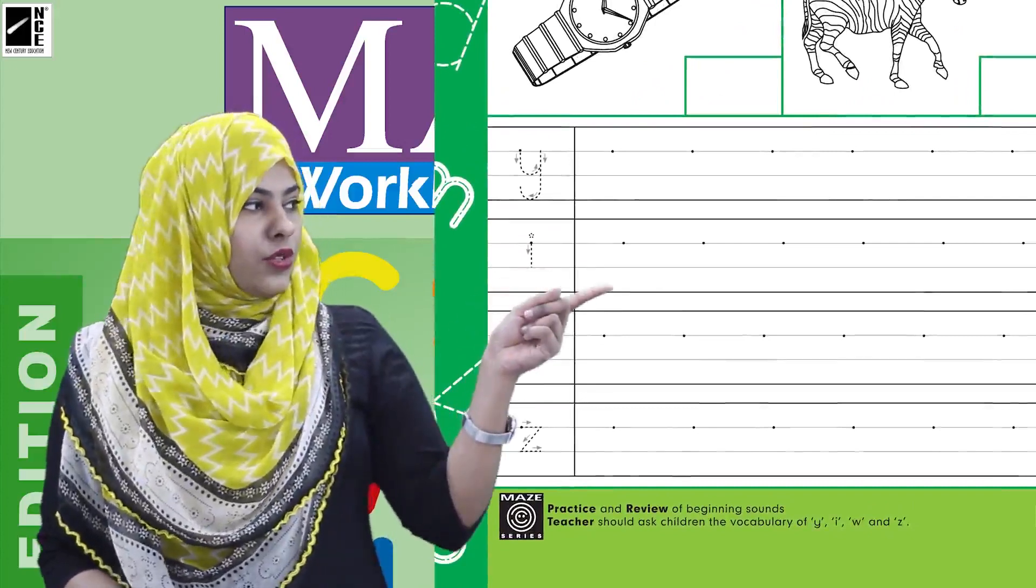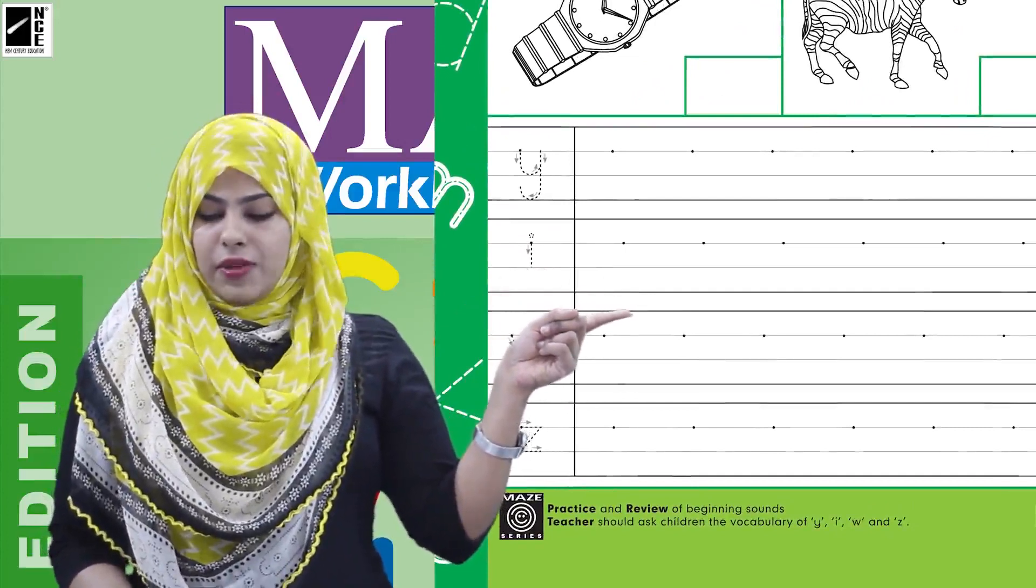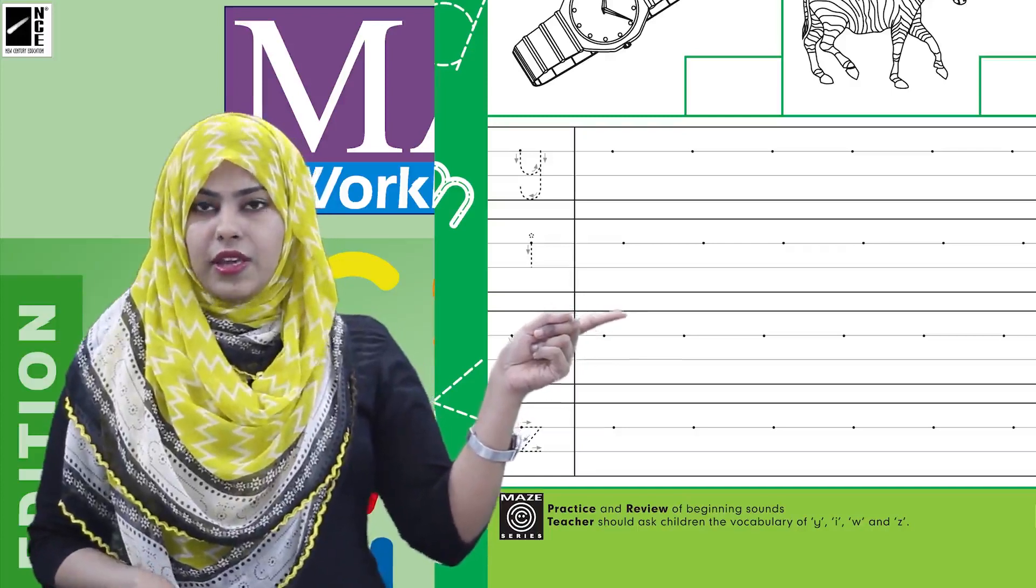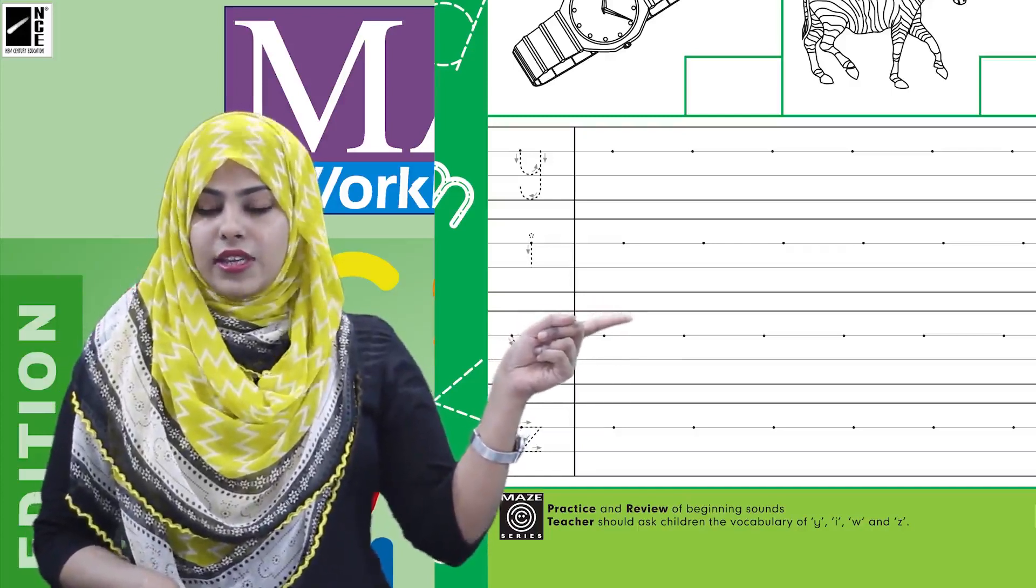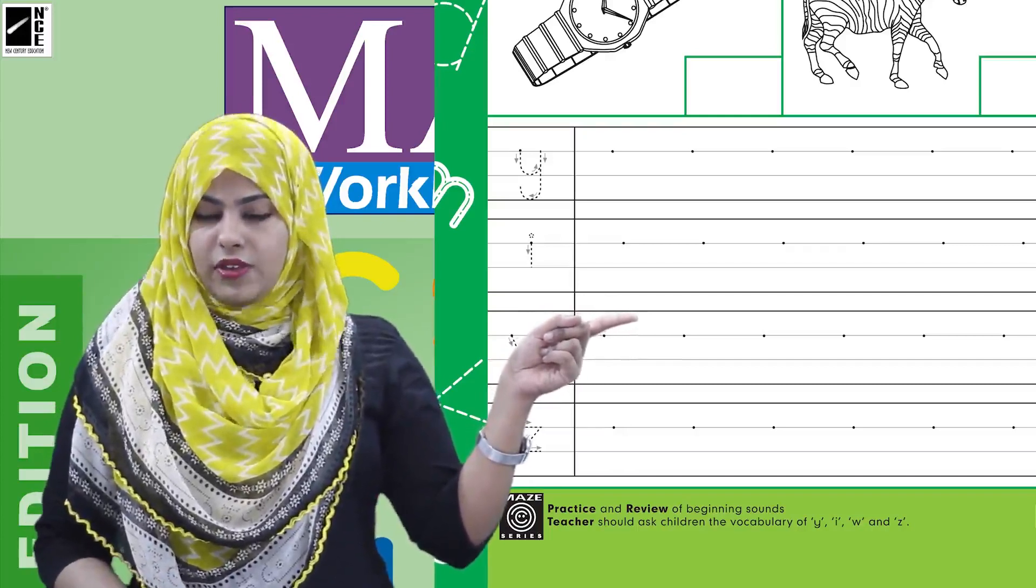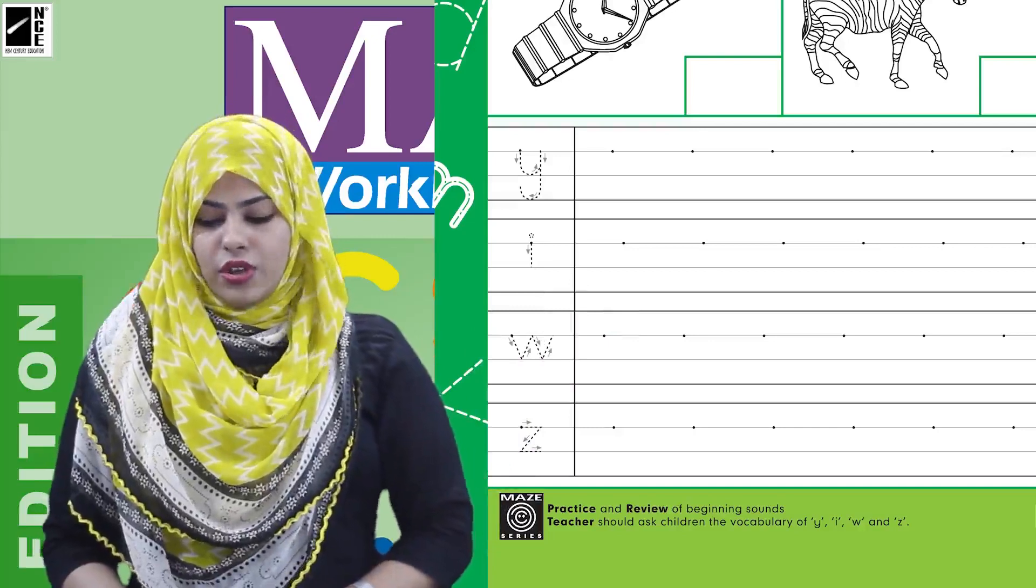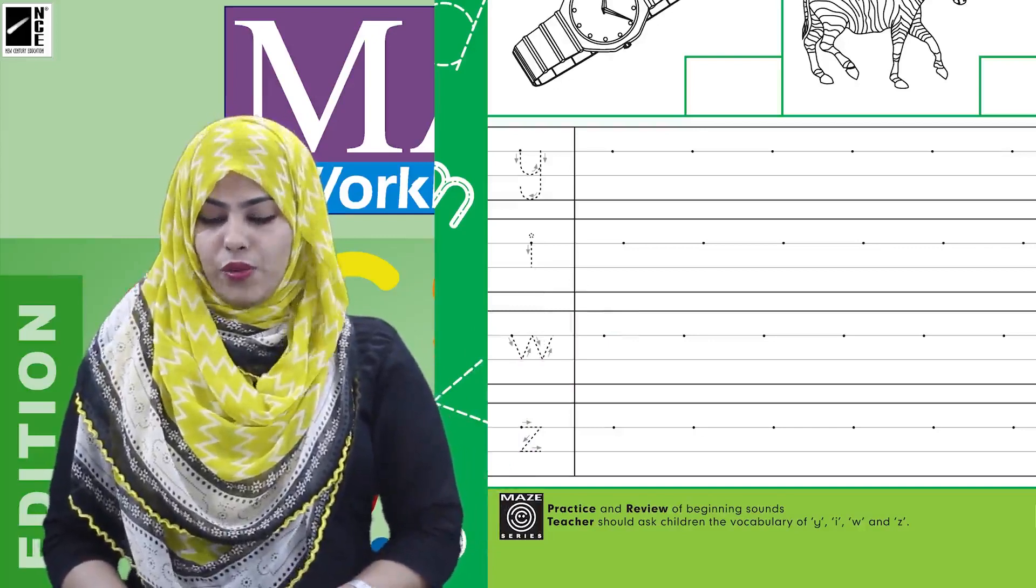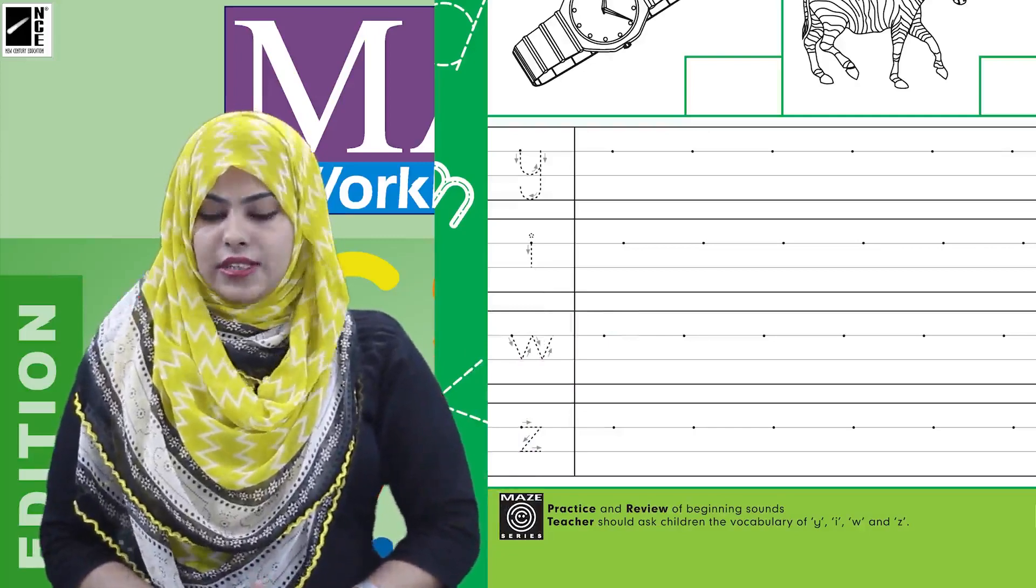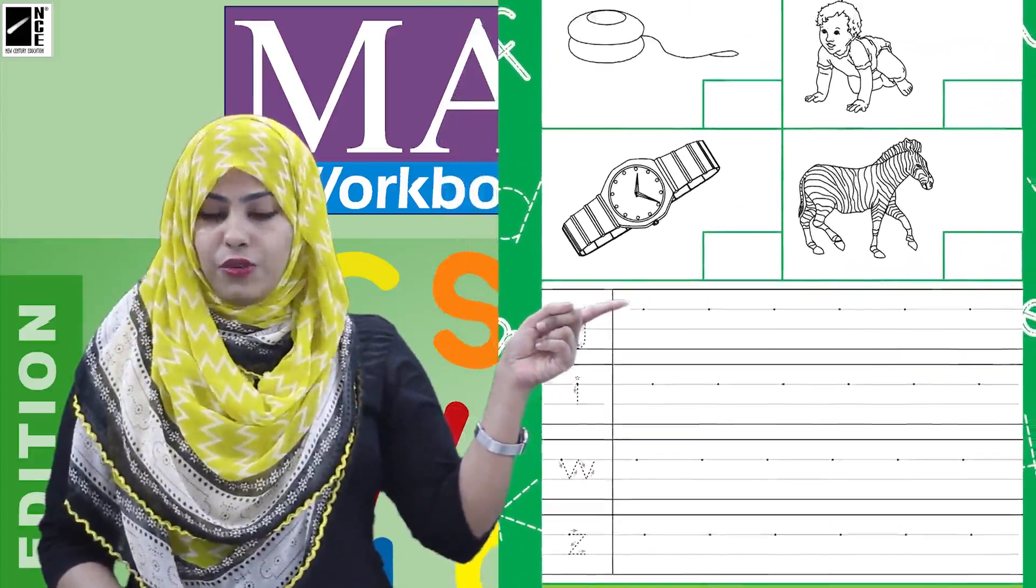We are going to write independently in the given line. We have lines given ahead of each sound, so we have to trace that same sound and then write it. We have a starting point given also, so we have to start from the starting point and write the sounds carefully and neatly. You should know which sound comes in which position.